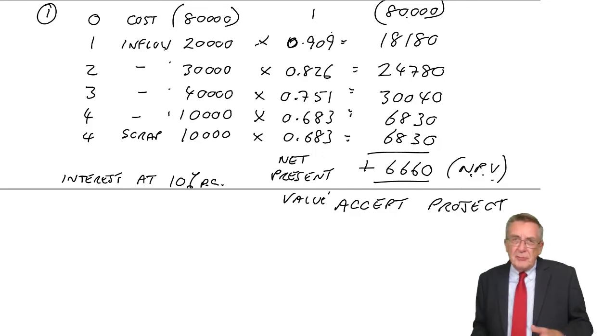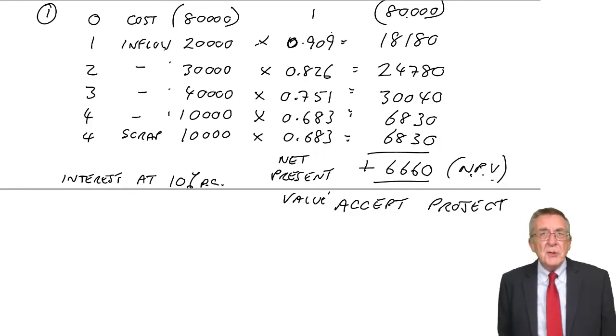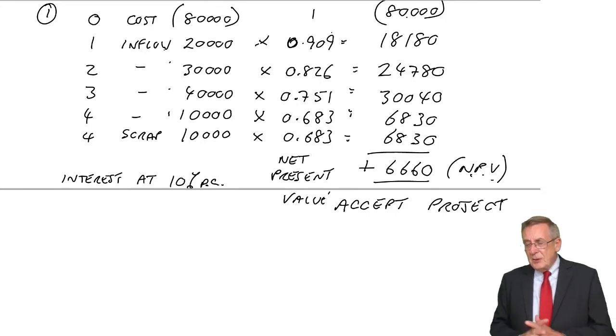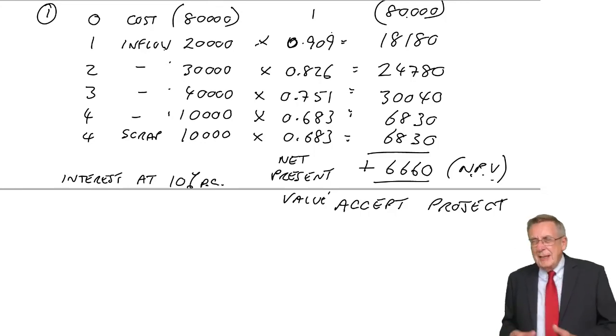But for a company, it's impossible to calculate the cost of money exactly. Because companies borrow from shareholders, they borrow from loans, all sorts of things. And so all you'd really know is that interest, we think, is about 10%. But we could be wrong.